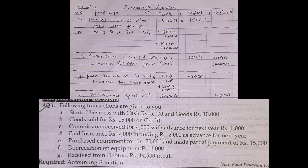In this case, we have started business with cash Rs. 5,000 and goods Rs. 10,000. We have assets: cash plus goods. So 5,000 plus 10,000 is equal to 15,000. We have started business with capital, so capital is Rs. 15,000.